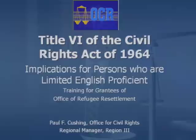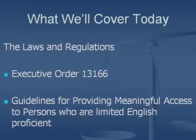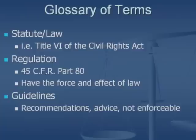I'd like to welcome our participants to a training sponsored by the Administration for Children and Families Office of Refugee Resettlement. We'll discuss today the implications and application of Title VI of the Civil Rights Act of 1964 to persons who are limited English proficient. My name is Paul Cushing. I'm the Regional Manager in the Office for Civil Rights in the Mid-Atlantic region in Philadelphia. What we'll cover today specifically are the law and the regulations, Executive Order 13166, and guidelines published by the Department to entities that receive federal assistance for providing meaningful access to persons who are limited English proficient.